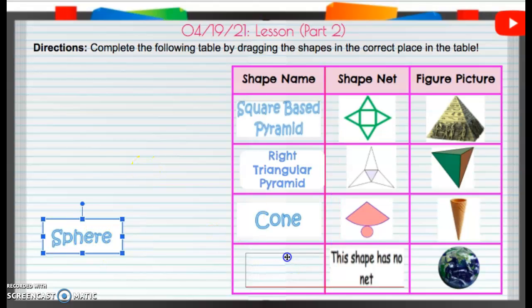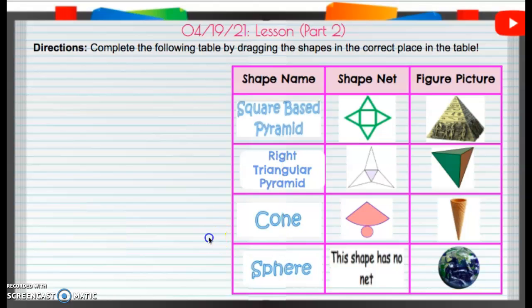Last but not least, a sphere. A sphere has no net, because it's kind of like a bouncy ball or the shape of earth. And that's going to actually be it for our lesson part one and two. Great, great job. Thank you.